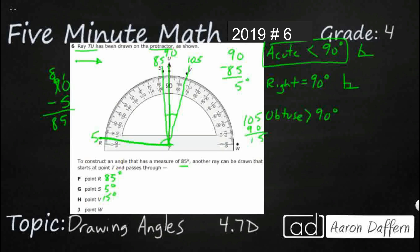And then finally, we can look at point W. Now, point W starts on this bottom line. So, we can actually use the inside. We could just go from zero and it goes all the way up to 90. And look at that. That is a 90 degree angle right there. That is a square corner. So, that's close, but not what we need. Our answer here is F, point R.